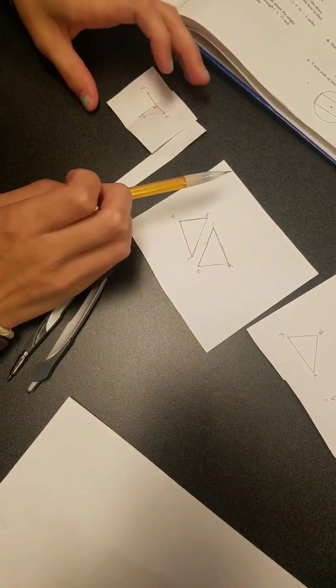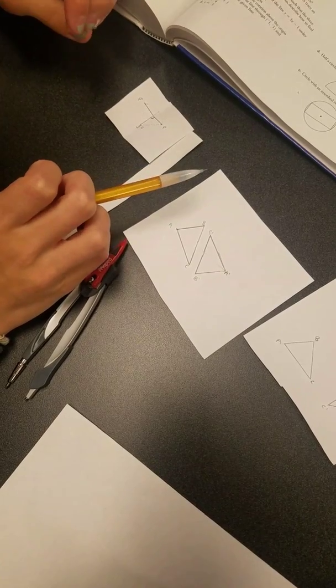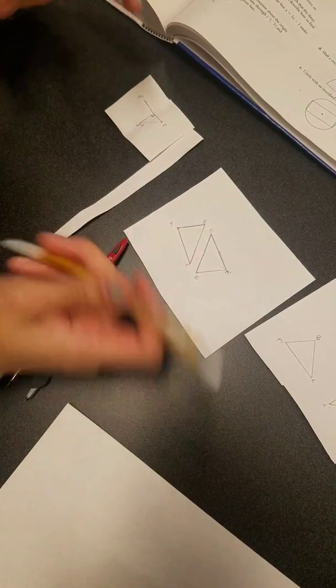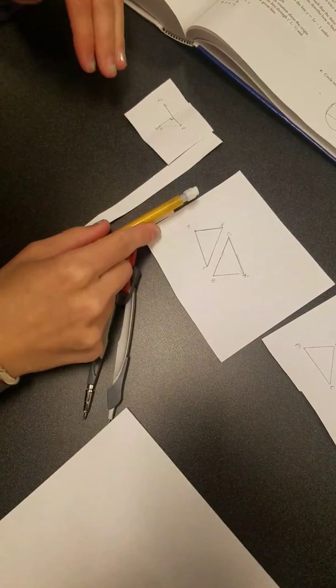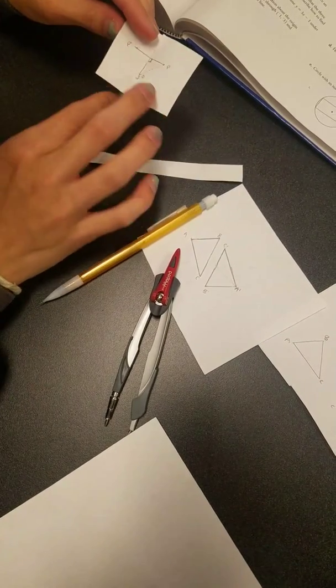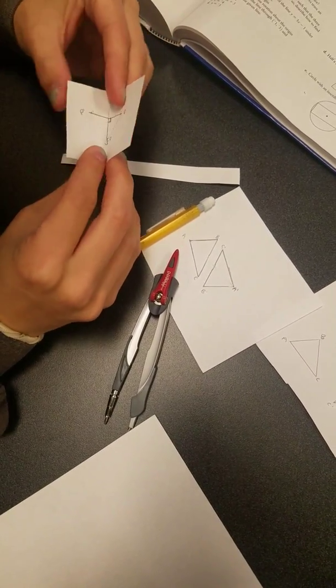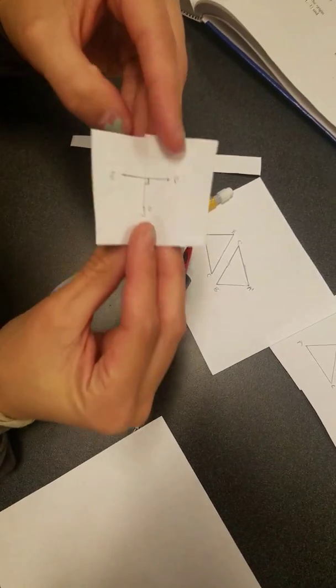So now we want to look at the line segment and notice that the length doesn't change when we're looking for a perpendicular bisector. So we're going to use the paper folding method and fold it right along the line.